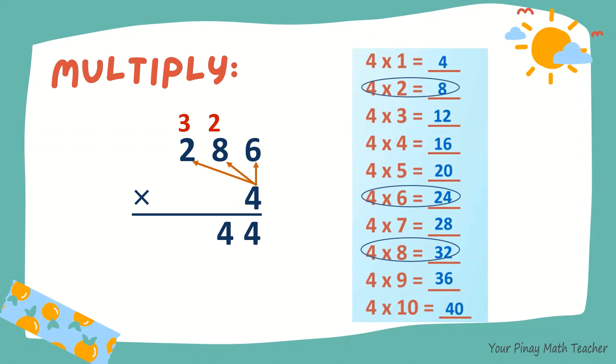4 times 2, 8. Plus 3, 11. So when 286 is multiplied by 4, the product is 1,144.